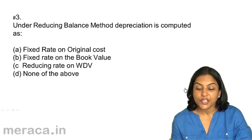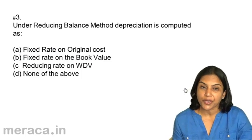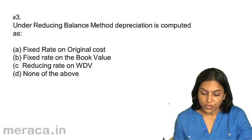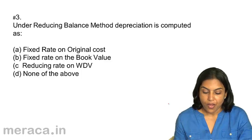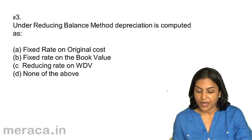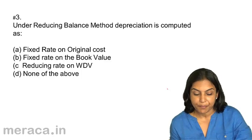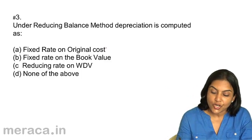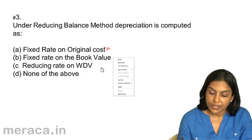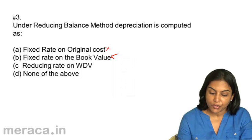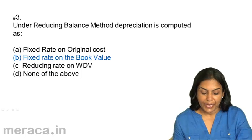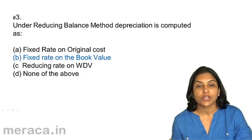Next, under the reducing balance method, depreciation is computed as: A, fixed rate on original cost; B, fixed rate on book value; C, reducing rate on written down value; D, none of the above. Under the reducing balance method, depreciation is computed as a fixed rate, but it is not on the original cost — it is a fixed rate on the book value. It is not a reducing rate. Therefore, the correct answer is 3B — fixed rate on the book value.